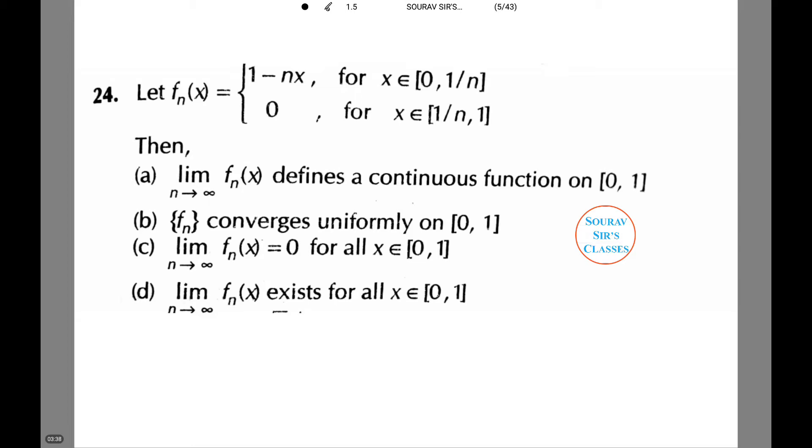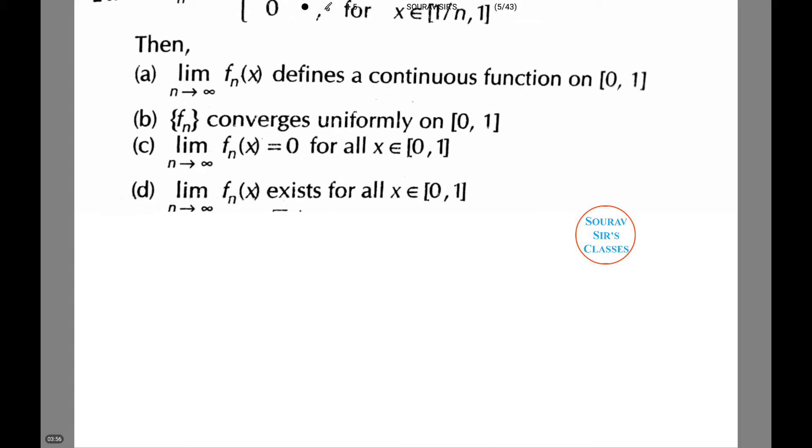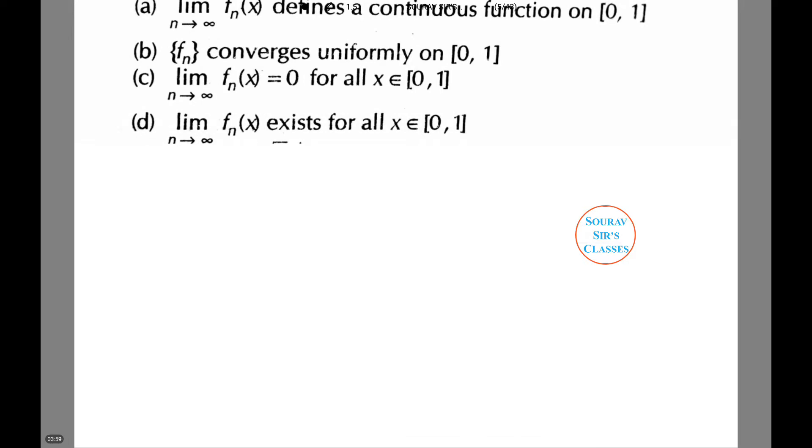The options are: limit n tends to infinity f_n(x) defines a continuous function on [0,1], f_n converges uniformly on [0,1], limit n tends to infinity f_n(x) equals 0 for all x belongs to [0,1], or limit n tends to infinity f_n(x) exists for all x belongs to [0,1].